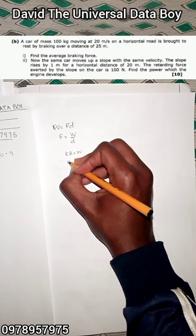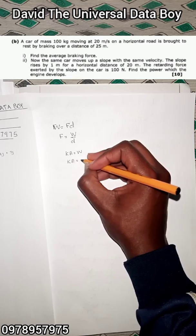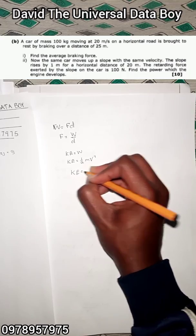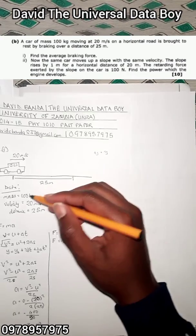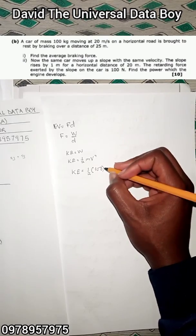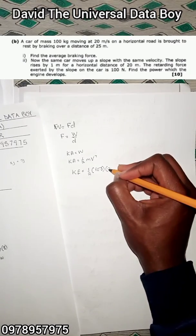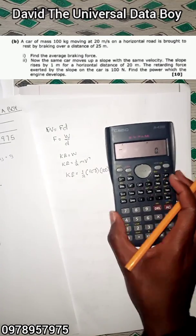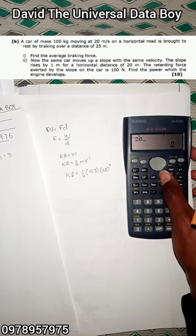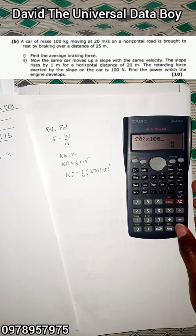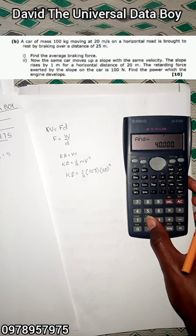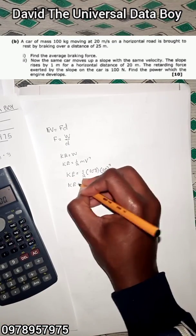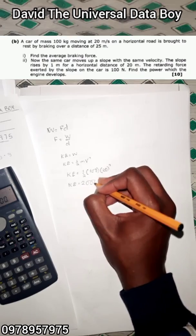The kinetic energy is equal to the work done in this case, and kinetic energy equals ½mv². So the kinetic energy equals ½ × 100 kg × (20 m/s)² = (100 × 400) / 2 = 20,000 joules, which is 20 kilojoules.